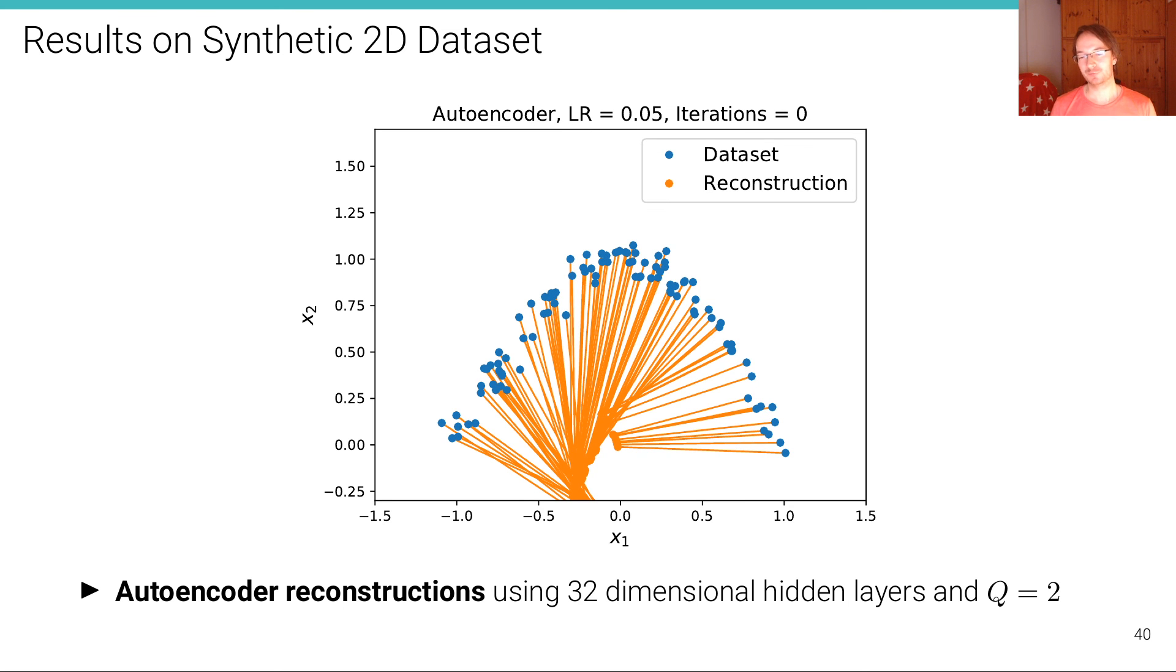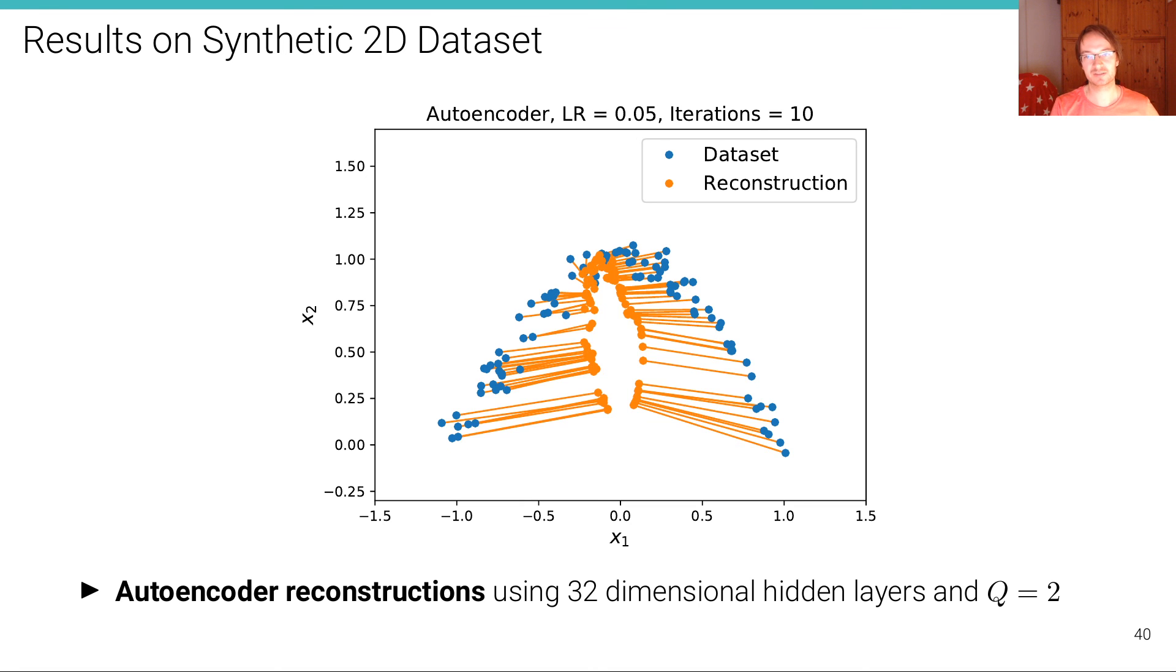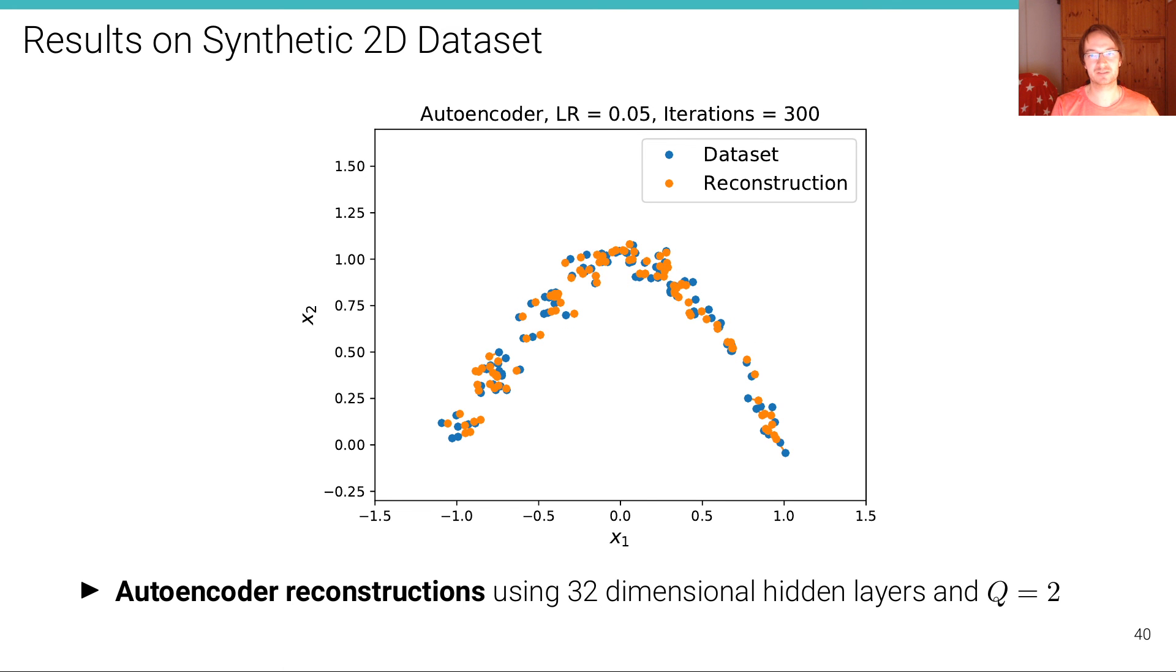And then, out of curiosity, what happens if we use the same model but with a two dimensional latent space? This is after the first iteration. This is 10 iterations. This is 50 iterations. This is 300 iterations. 10,000 iterations. You can see that the autoencoder is capable of reconstructing the data set precisely. This is what we would expect because with two dimensions, we can't actually gain anything. We do not need to compress. So we can basically even have a linear mapping for this needs to be discovered by the autoencoder still.